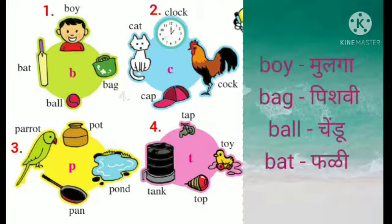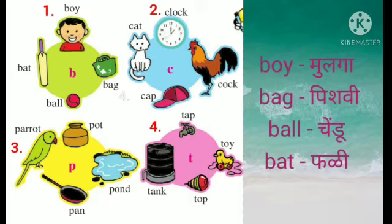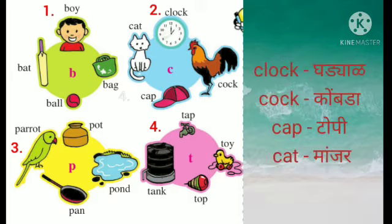So in the first part, let's see which pictures are those. Boy — boy manje is mulga. Bag — bag manje is pishvi. Ball — ball manje is chendu. Bat — bat manje is fadi. Chendu fadi madli fadi.